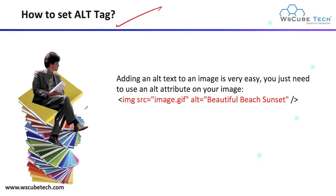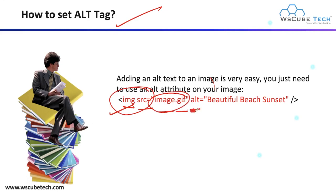How can you set an alt tag? In your webpage, we have this particular attribute — img src image.gif. This is the HTML code we can use to add an image in our webpage. After that, we have to use this particular attribute, which is alt. Alt equals to whatever alt tag you want to add. For your alt tag, it's compulsory that you mention your primary keyword there to optimize your image.